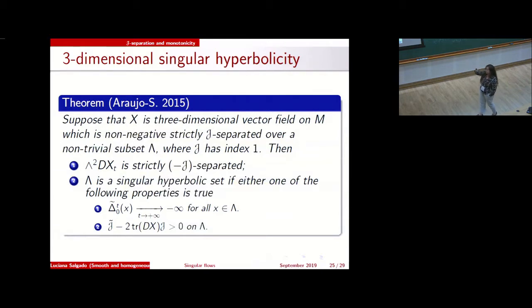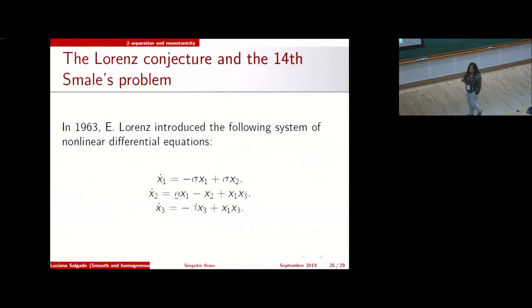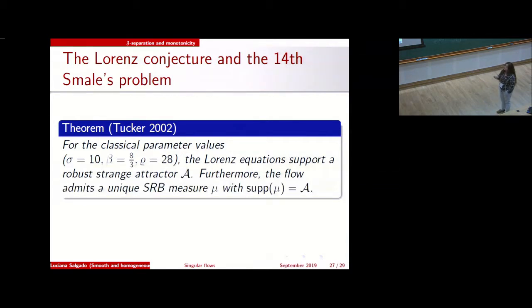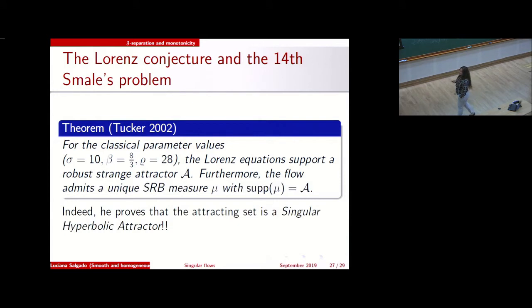As Stefano mentioned, Tucker proved in 2002 that for the classical parameter values the Lorenz equations support a robust strange attractor, and furthermore admit a unique SRB measure with support on the attractor. More precisely, he proves that the attracting set is a singular hyperbolic attractor.